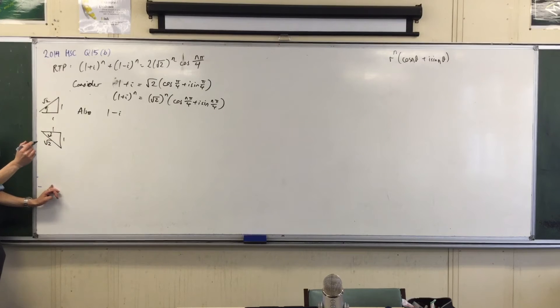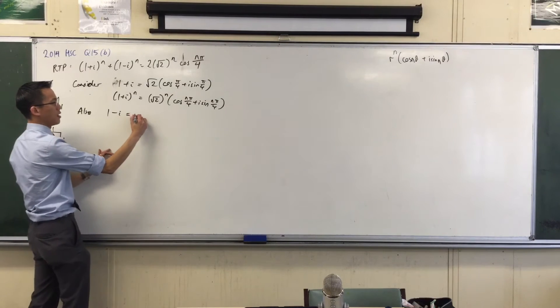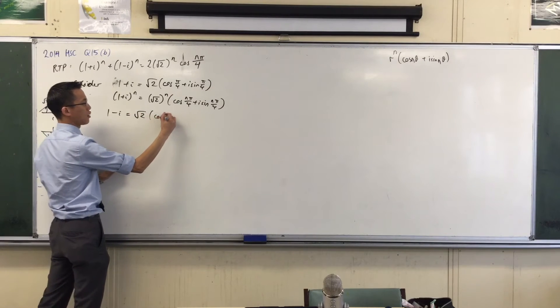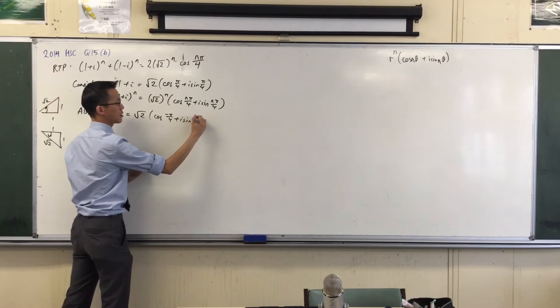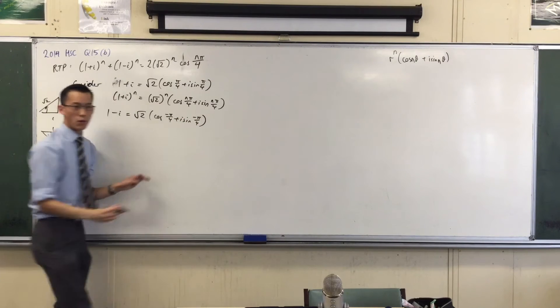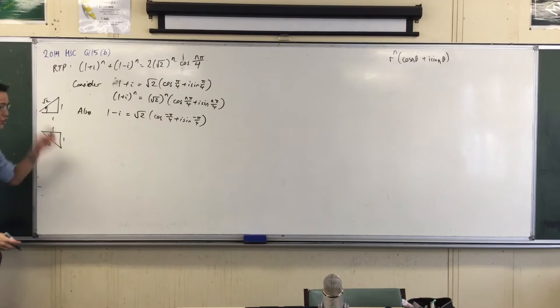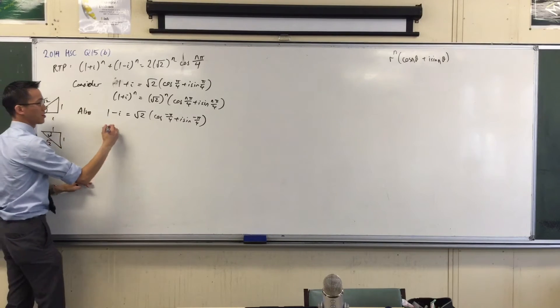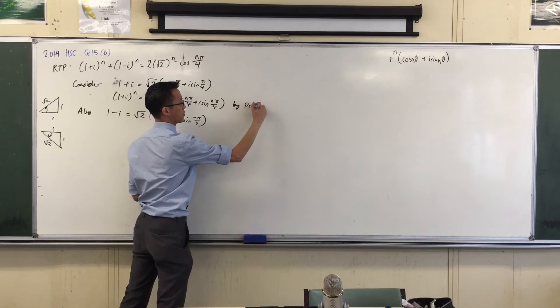It's negative pi on 4. Yeah, so let's go through this. This is still root 2. This is cos of negative pi on 4 plus I sine of negative pi on 4. Yep. You can go ahead. You can apply De Moivre's theorem to it just like before. I should have said that, by the way, by De Moivre's theorem.